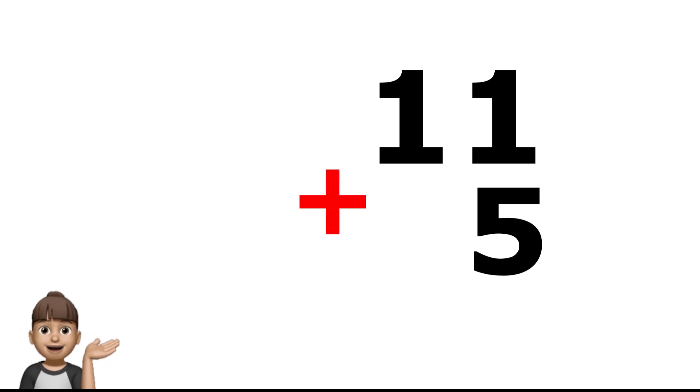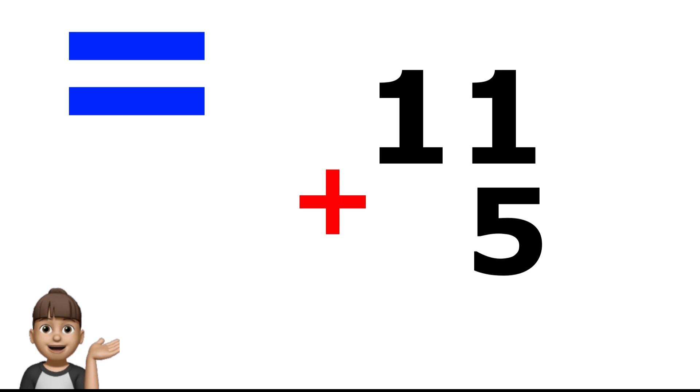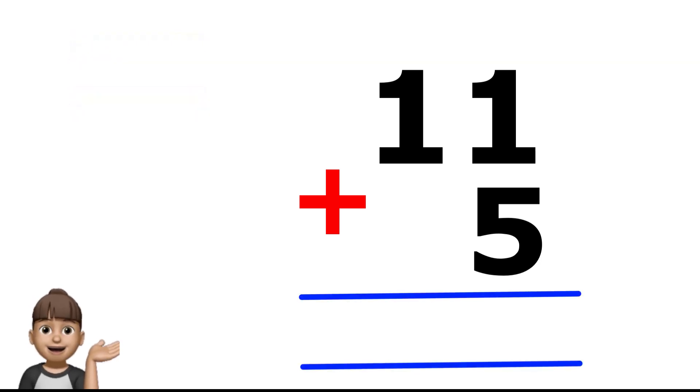But, the equal to sign changes a little bit. Instead of it to be this little dash and dash, it is now a long dash and another long dash reaching to the length of the number under it. Like this. This is block form.